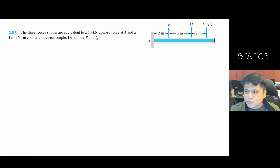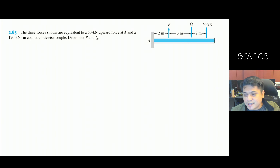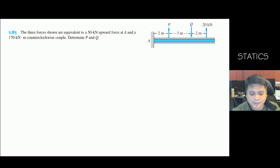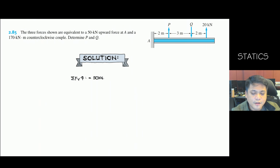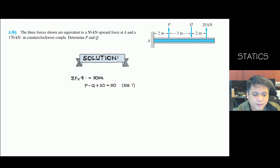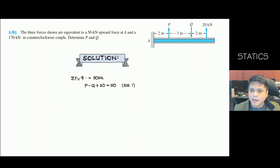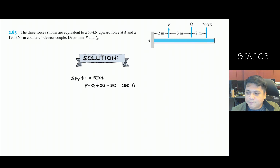For these coplanar forces — which lie on the same plane in 2D — we take the summation of forces. They are not concurrent but they are parallel. Taking summation of forces vertical: P minus Q plus 20 equals 50 kilonewton upward. That is equation 1. Since we have two unknowns, we need at least two equations. For coplanar forces, we have three possible equations: summation of horizontal forces, summation of vertical forces, and moment.